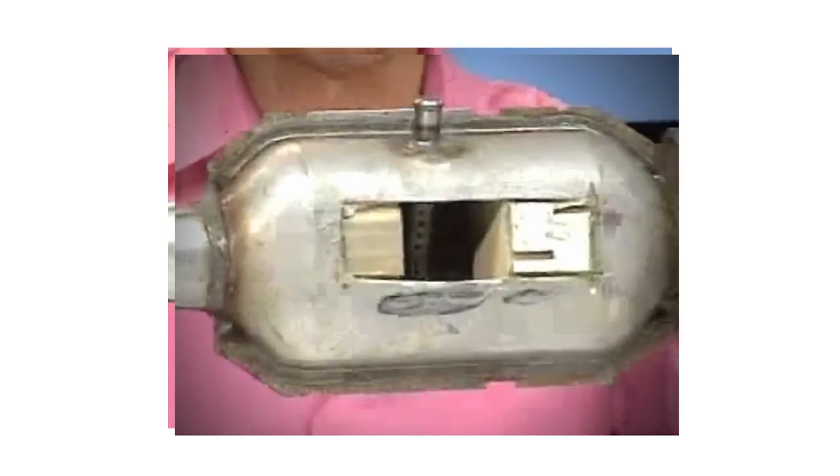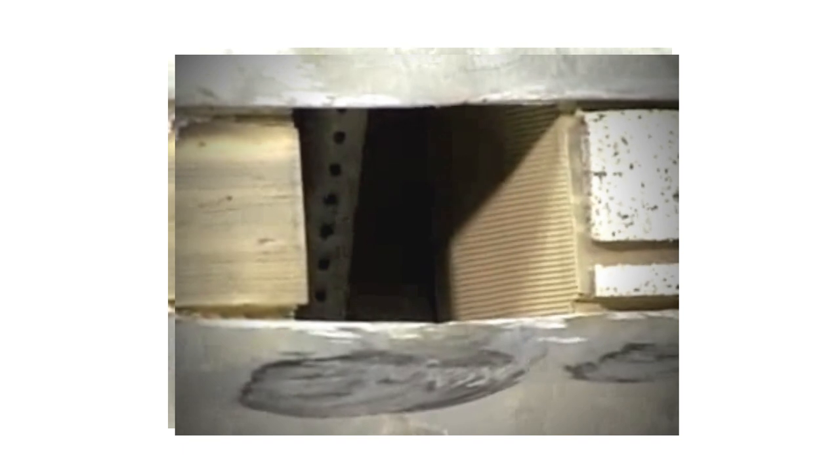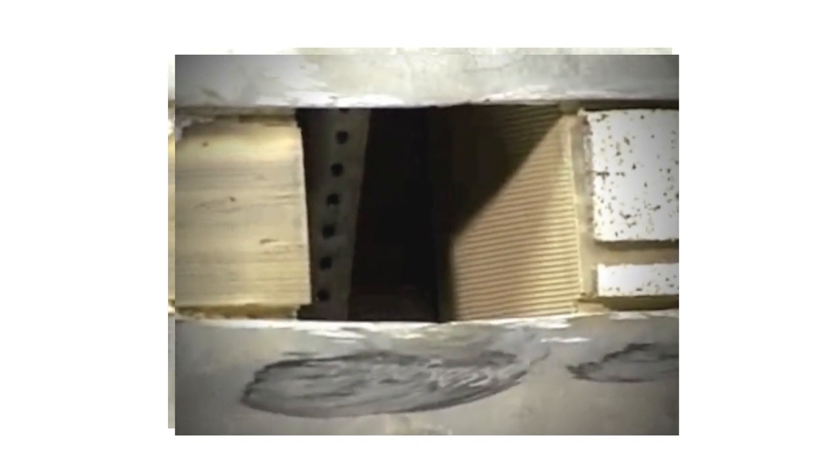So this is a catalytic converter that we've cut a big chunk out of, so they don't normally have a big hole in them. And you might not be able to see this, but there's sort of a honeycomb network of sort of cream colored stuff here, and the gases, the hot gases, go past that honeycomb, and chemical reactions occur.